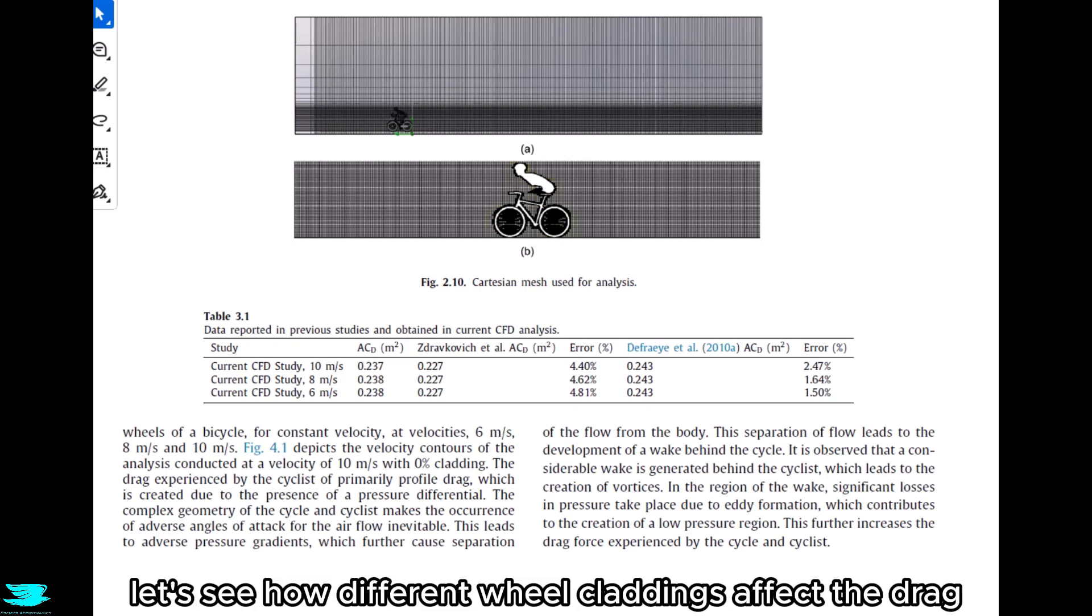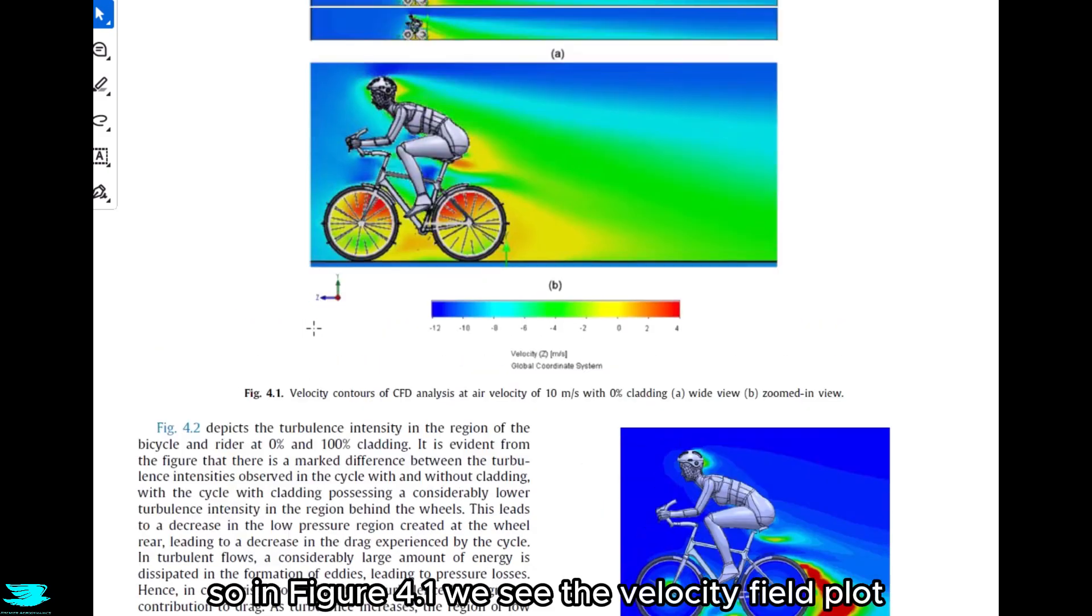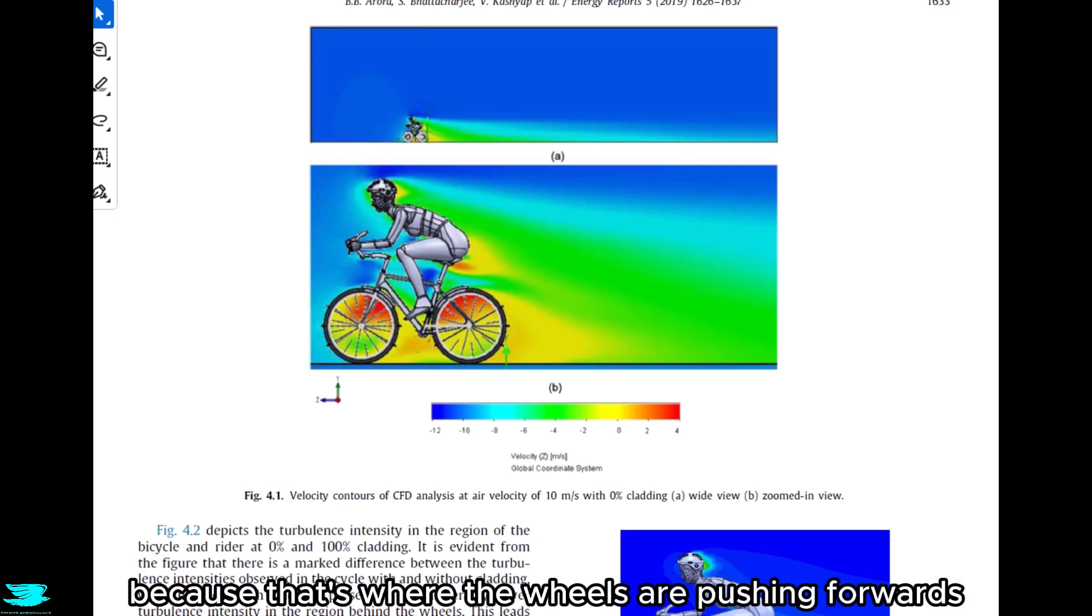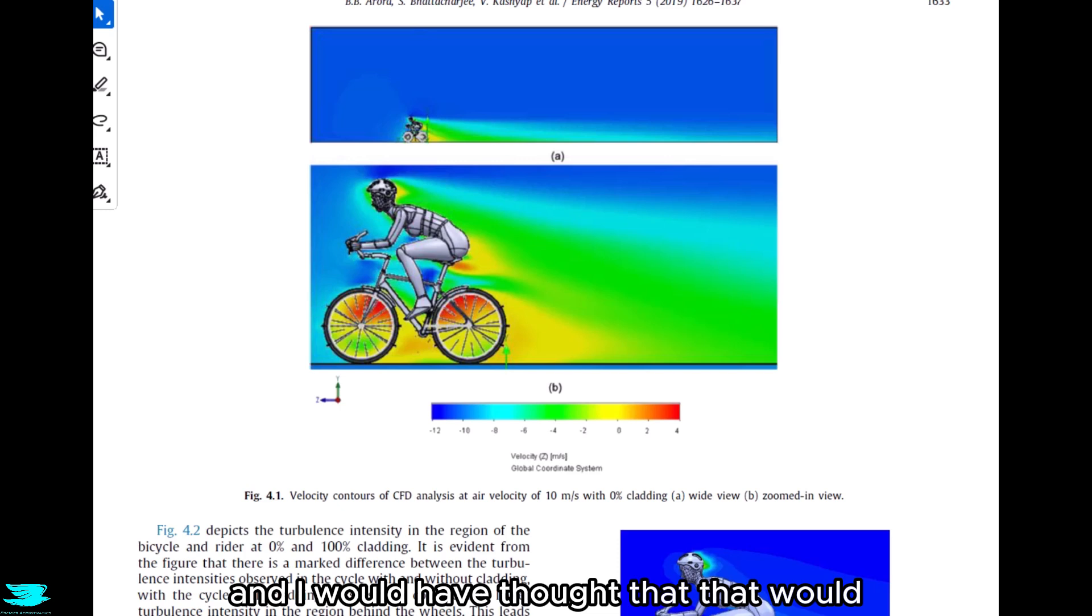Let's see how different wheel claddings affect the drag. In figure 4.1, we see the velocity field plot for the completely open rims, and this is at 10 meters per second. The thing that stands out to me is that most of the wake is definitely at a downwards angle. That suggests that lift is produced, and that's interesting. The second thing that really stands out to me is that inside the rims, the speed of the flow at the top of the rims is the fastest out of anywhere in the flow.